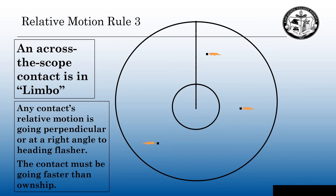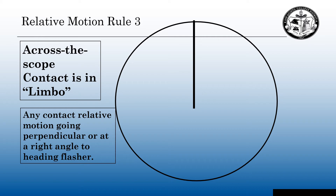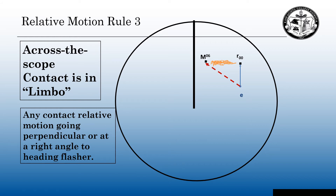Let's find out why limbo targets or across-the-scope targets are faster than own ship. If we construct a basic radar triangle, it will make sense. The relative motion from R00 to M06 is going perpendicular or at a right angle to the heading flasher. I put in my own ship's true course and speed vector. Then when I complete the triangle from E to M, E to M is longer than our true course and speed. So E to M is the contact's true course and speed, or their true motion — so they are going faster than own ship. In geometry, this is a right triangle — it's the hypotenuse of a right triangle.